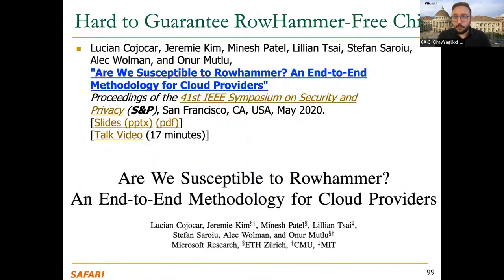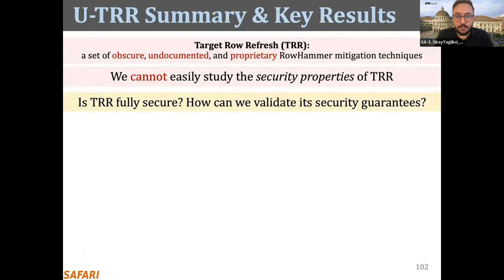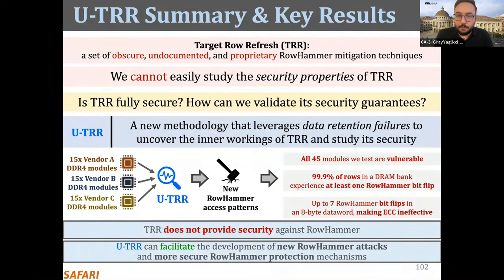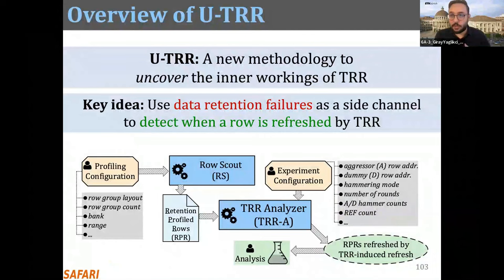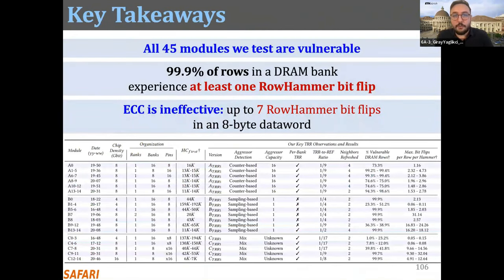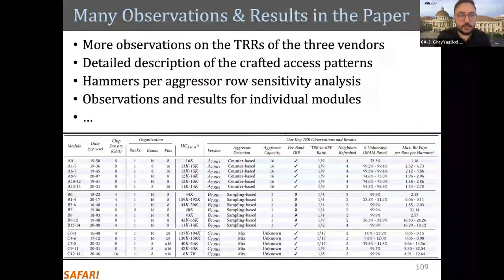We also investigated how to guarantee a chip is rowhammer-free — and it seems very hard to guarantee. A follow-up work proposes a methodology using data retention failures to uncover the inner workings of TRR mechanisms and automatically generates new rowhammer access patterns that defeat on-die DRAM rowhammer protection. We tested 45 modules and all of them are vulnerable. Most rows can experience rowhammer bit flips, and ECC is not an effective solution because many bit flips occur in a single data word.